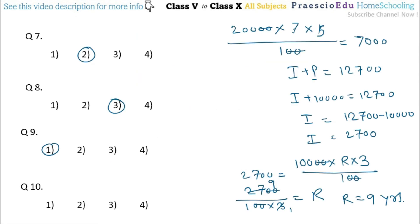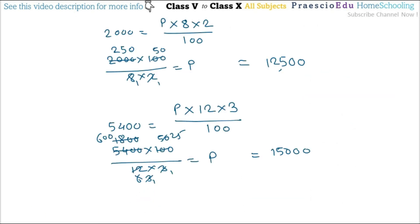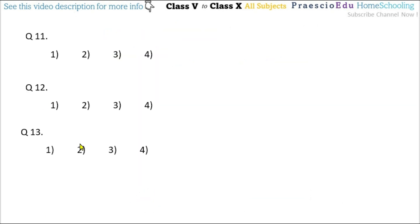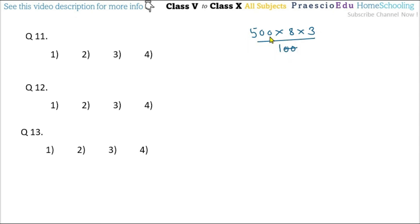Question number 11: at the rate of 8% per annum, what will be the interest for 3 years on a principal of ₹500? I = 500 × 8 × 3 / 100. The two zeros cancel, giving 5 × 8 × 3 = 120. The interest is ₹120 — option number 2.